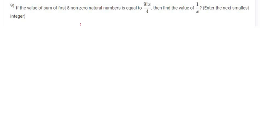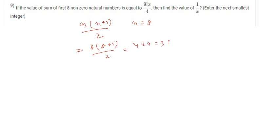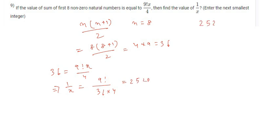We know the formula for the sum of first n natural numbers is n(n+1)/2. In the question, n = 8, so the sum is 8 × 9 / 2 = 4 × 9 = 36. The question says if the sum of first eight non-zero natural numbers equals 9! × x / 4, find 1/x. So 36 = 9! × x / 4, which gives 1/x = 9! / (36 × 4) = 2520. So 2520 is the correct answer.